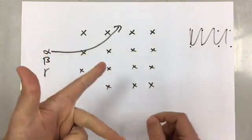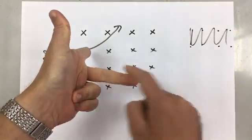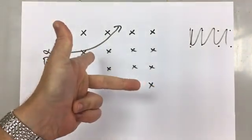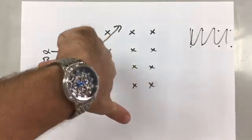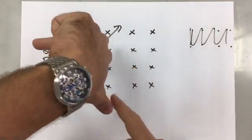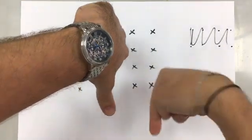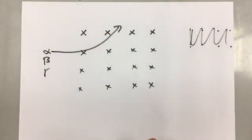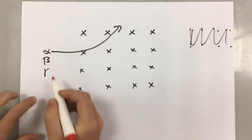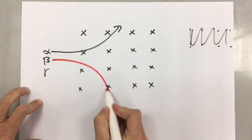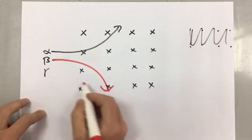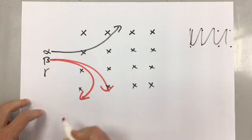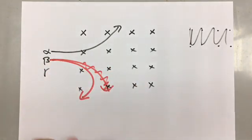We can do the same thing with the beta particle. The beta particle - the field is still in the same direction, but the charge is different. The charge is opposite because the beta particle has an opposite charge. So the charge is that way, which means the movement is down in the opposite direction, which is what we would expect. So our beta particle goes down. Again, it gets deflected more than the alpha particle. In fact, it would probably do more like that. It gets deflected more than the alpha particle because it is much lighter than the alpha particle.